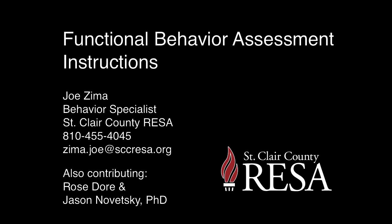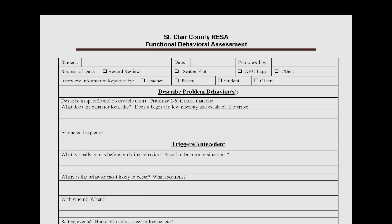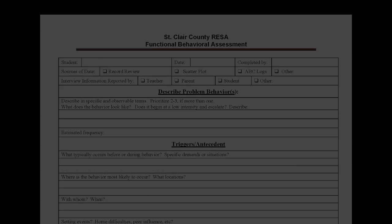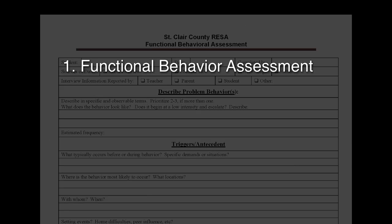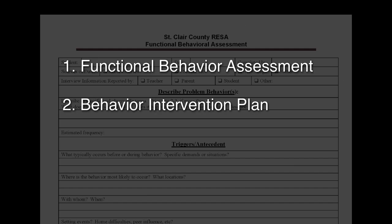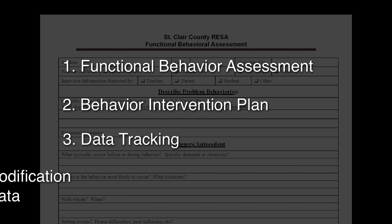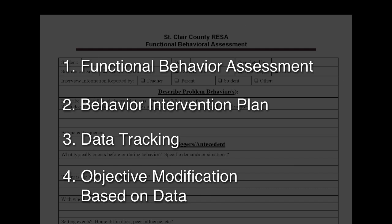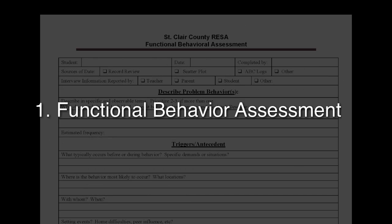A functional behavior assessment is designed to help you arrive at an understanding of a student's problem behavior in order to develop a behavioral intervention plan. Of the four steps utilized to help reduce problematic student behavior — functional behavior assessment, behavior intervention plan, data tracking, and objective modification based on data — it could be argued that a well-written functional assessment is the most important component in an effective plan.